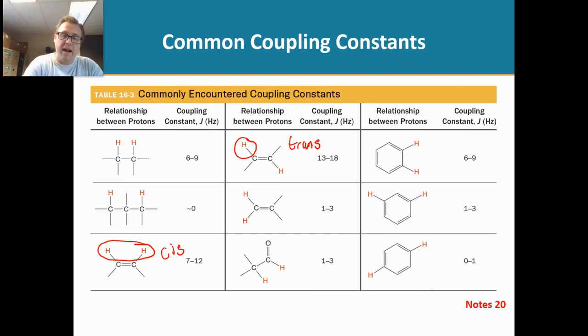And if the hydrogens are on the same carbon, we call that geminal. But look what's interesting. If it's cis, trans, geminal, they all have different J-coupling constants.